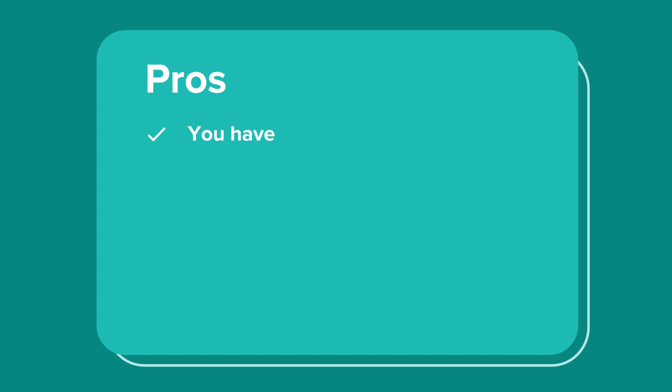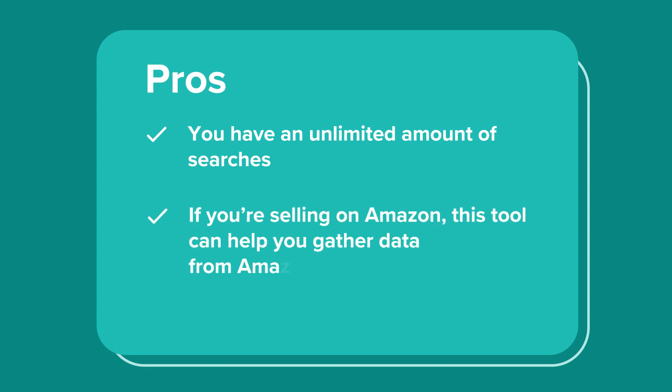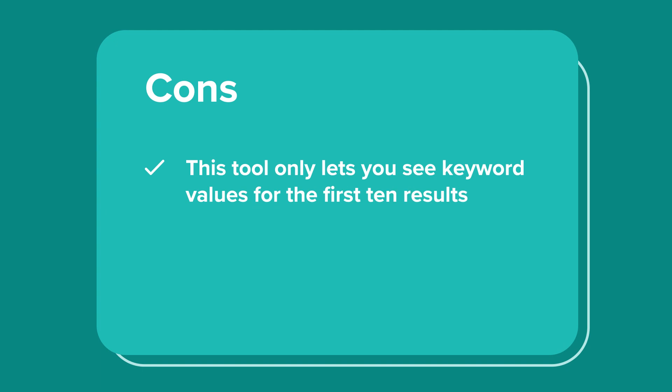Let's summarize the pros and cons. The main pro is that you have an unlimited amount of searches, so your keyword research is not as restricting as with other tools, and if you're selling on Amazon, this tool can help you gather data from Amazon too. The main con is that this tool only lets you see keyword values for the first 10 results. So now that I've shared these three free keyword research tools — Ubersuggest, Google Trends, and Ahrefs Keyword Generator — I'm wondering if you're planning on trying some of them out. If so, share your experience in the comments below.